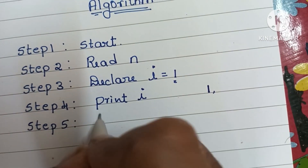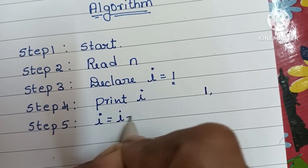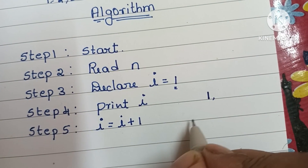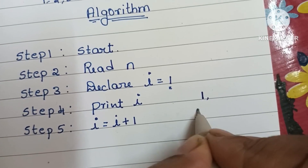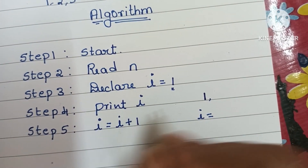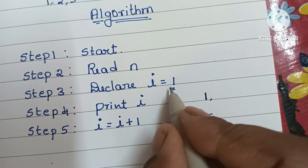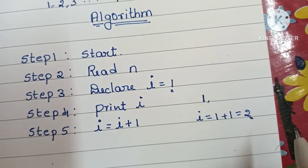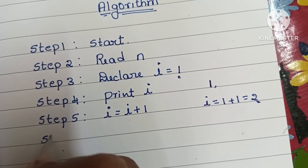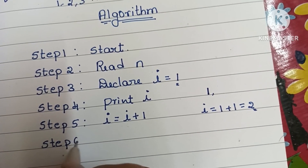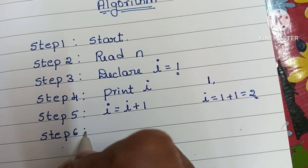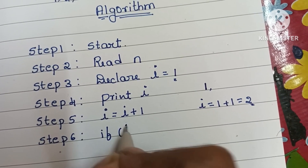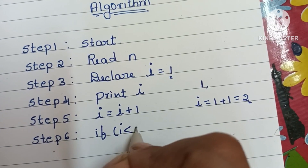Next we have to increase the value of i: i = i + 1. The value of i is 1, so 1 + 1 means i becomes 2. In step six, we check if i is less than or equal to N.